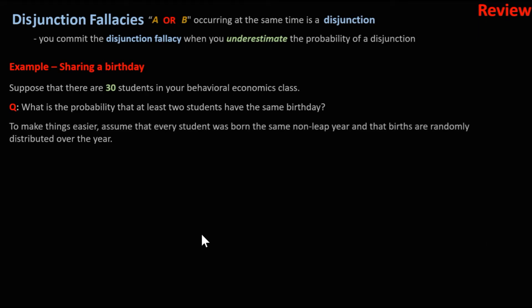Many people think this probability is tiny. To make things simpler, let's assume that every student was born in the same non-leap year and that birthdays are randomly distributed throughout the year. It's best to think of this first as what's the probability that nobody shares a birthday, then we can use the NOT rule.